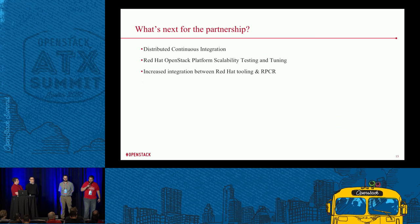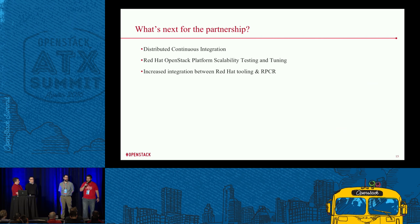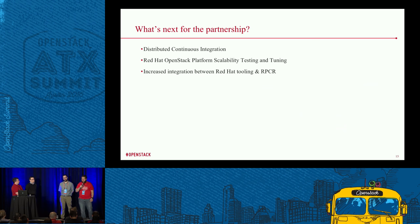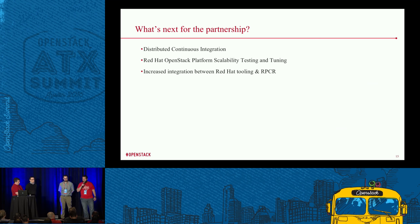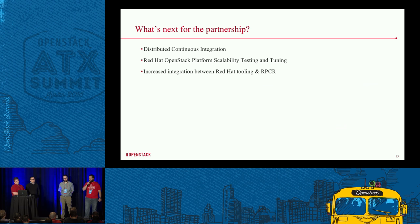What's next for our partnership? We're working with Red Hat to expand the way we test future versions of OpenStack. One of the ways we've managed to do this is by configuring the Distributed Continuous Integration, or DCI for short. This essentially allows us to test pre-development and pre-GA release versions of OSP to ensure it works in our environment with our configurations. We've also worked with Red Hat using the OSEC cluster and taken away some key configuration and performance tuning parameters from that. And lastly, we'd like to continue to increase integration between Red Hat tooling and the Rackspace Private Cloud powered by Red Hat offering.